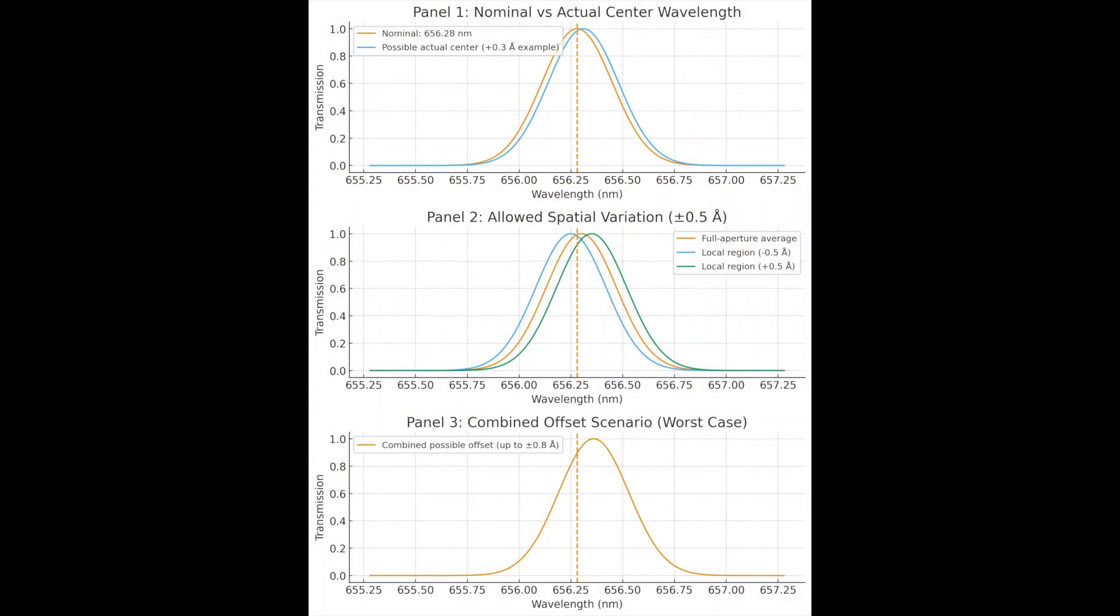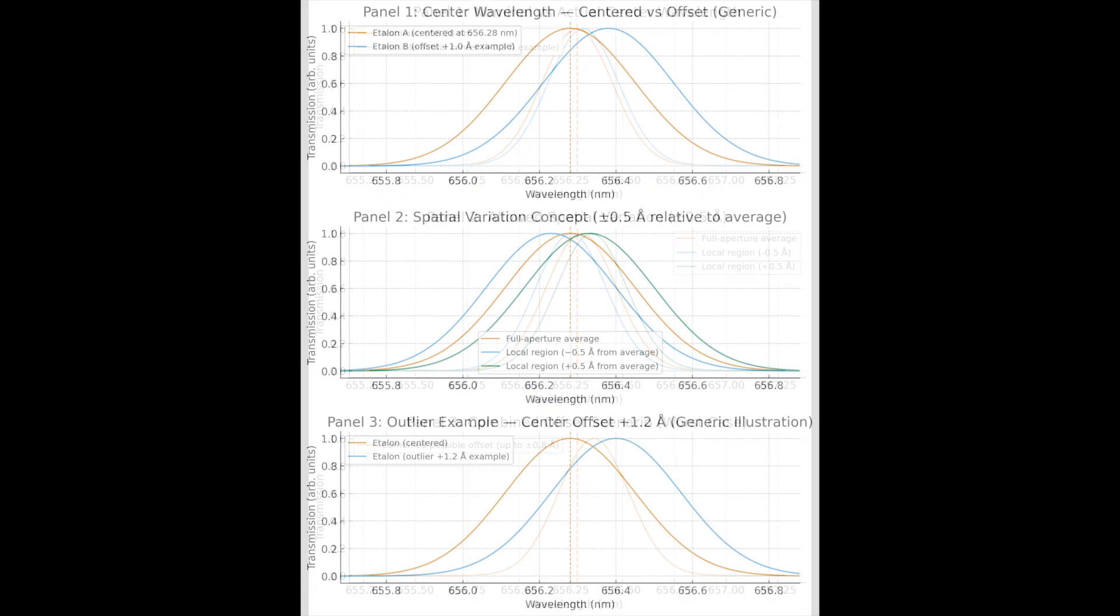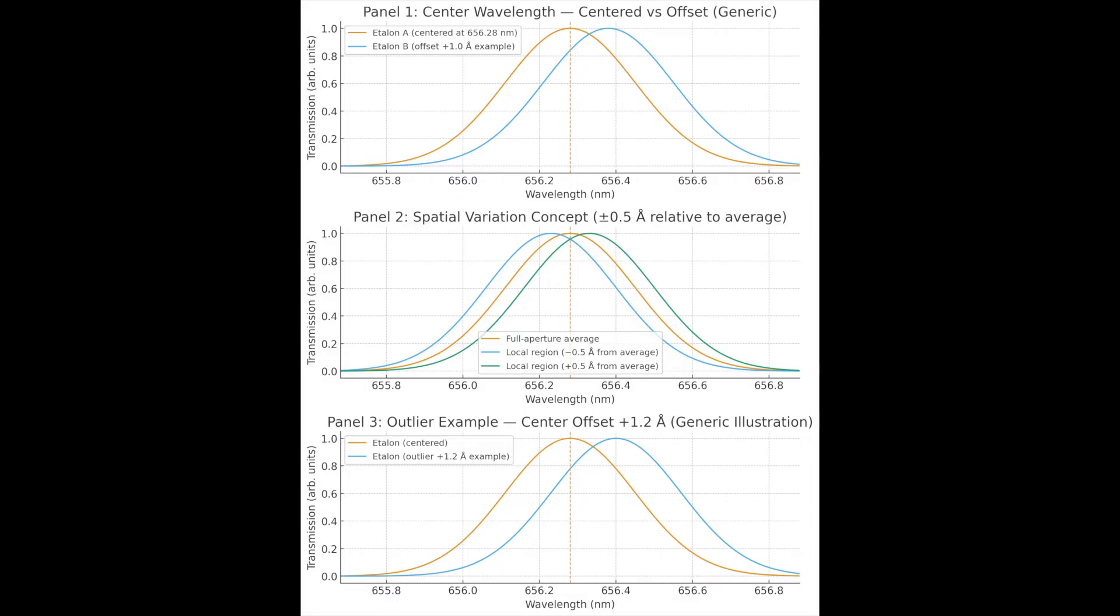Understanding specifications. Daystar's SE grade tolerance is specified as, quote, within plus or minus 0.5 angstroms of the full aperture average. There are two important nuances to note here. First, the full aperture average is not specified. The full aperture average may not be perfectly centered on 656.28 nanometers. Local regions are allowed to vary plus or minus 0.5 from that average, assuming that it meets spec. So an SE grade etalon, like a Quark Chromosphere, can be slightly off-band overall, plus have regional variation, resulting in some units being noticeably shifted from the ideal H-alpha line.